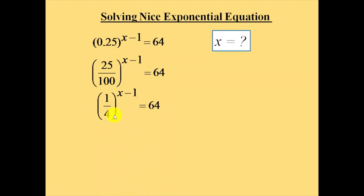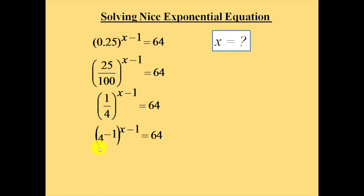1 by 4 to the power (x minus 1). Now 1 by 4 can be written as 4 to the power minus 1, because when we bring a number from the denominator to the numerator we add minus 1 in the power. So that becomes 4 to the power (minus 1), whole to the power (x minus 1). Using the rule a^m whole power n, we multiply the exponents.